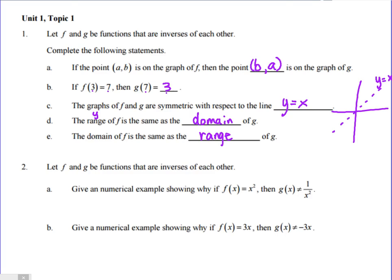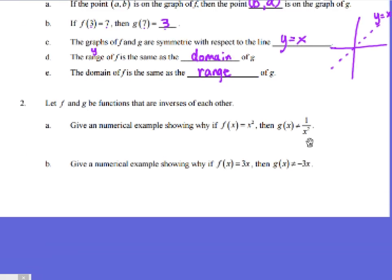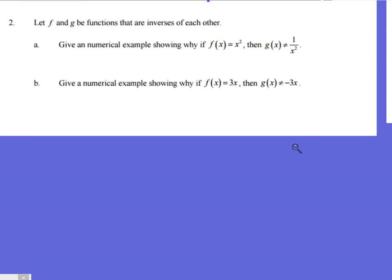Alright, so if we let f and g be functions that are inverses of each other, they want to say, give a numerical example showing why if this is f(x), then g(x) does not equal that. Okay, so let's give an example. Let's just try a number, let's say 2, f(2).